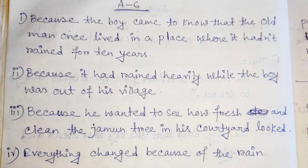The earth was damp underfoot because it had rained heavily while the boy was out of his village. The boy wanted to see how fresh and clean the jamun tree in his courtyard looked. When he got home, he saw that everything had changed because of the rain.